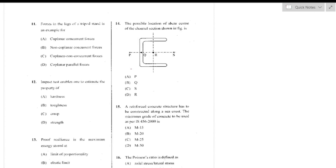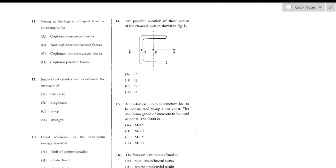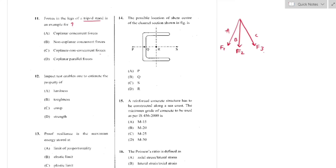Question number 11: Forces in the legs of a tripod strand. The tripod has three legs with corresponding forces F1, F2, F3, all passing through the same point but not in the same plane. These forces represent non-coplanar concurrent forces — option B is the right answer.